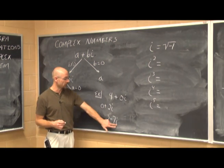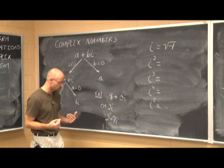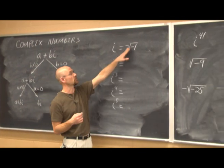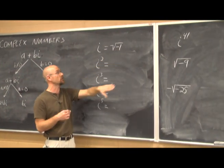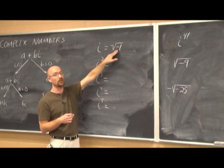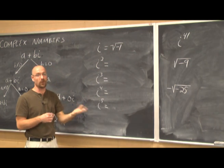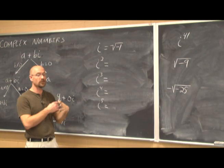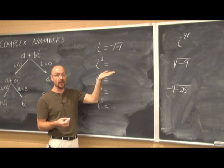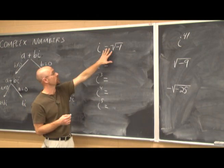Now let's define this i — why do we call it the imaginary unit? Because there's no square root of a negative number in the real number system, we define i as the square root of negative 1. What's nice about negative 1 is we can always factor it out: 1 is a factor of every number, and factoring out a negative just changes its sign.